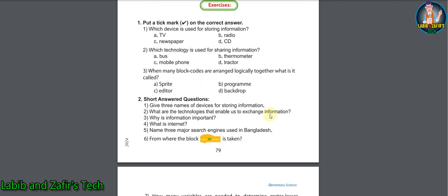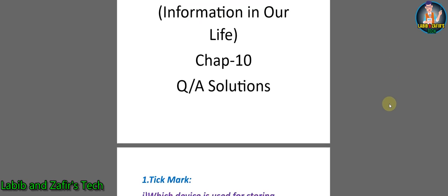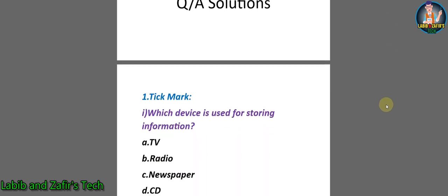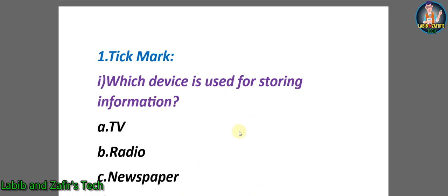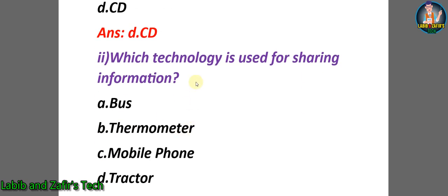Now we will go through the exercises of this chapter — elementary science class 5, 'Information in Our Life,' chapter 10. First, we will go through some tick marks. Number one: which device is used for storing information? A) TV, B) Radio, C) Newspaper, D) CD. The answer will be D) CD.